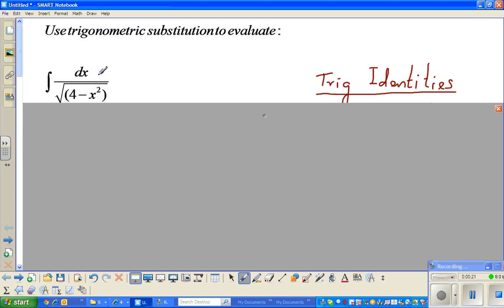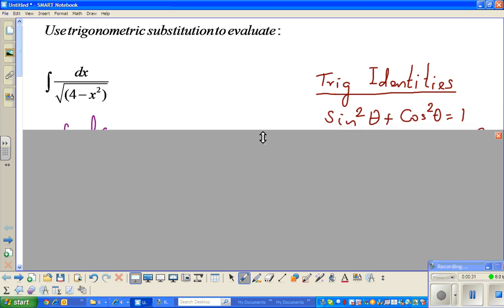So the question is integrate dx over square root of 4 minus x squared. I have already done the workings and will go step by step. We know a trig identity, sine squared plus cos squared is 1. We will use that later.